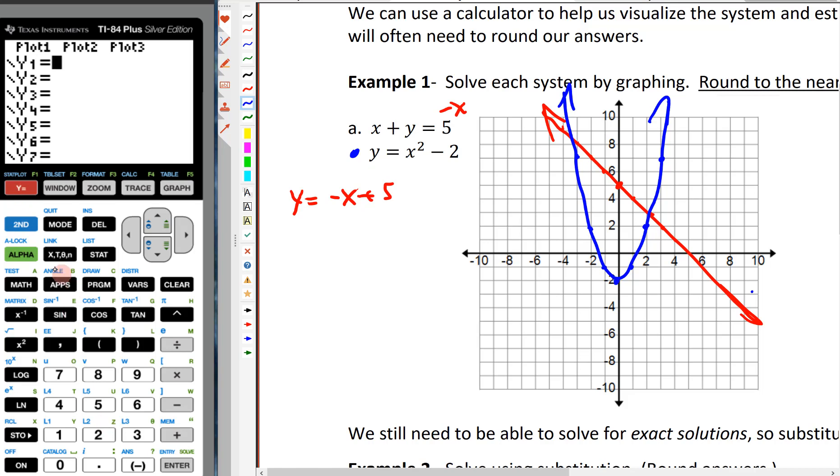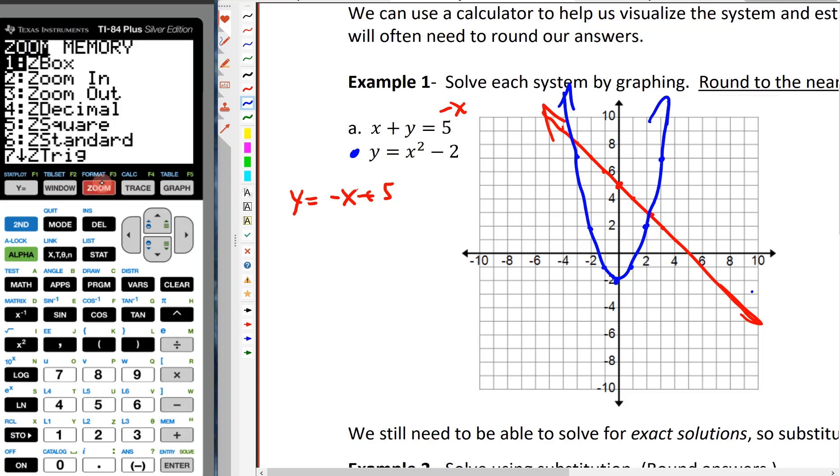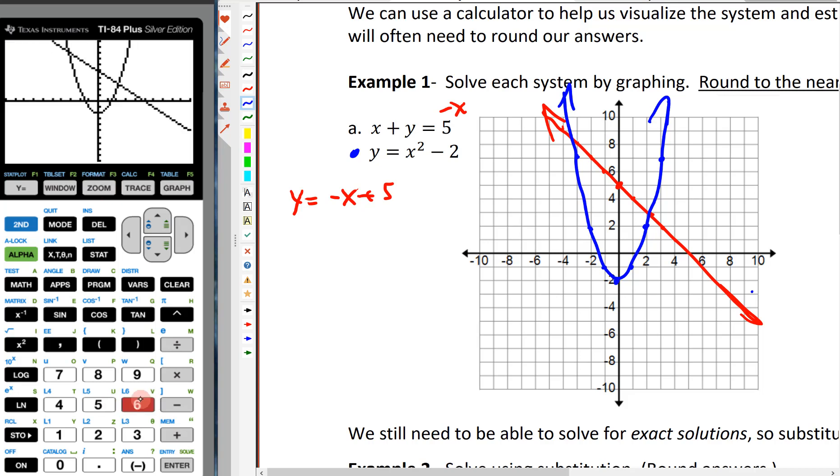So we're going to type these in. I'm going to hit y equals, and I'm going to type in x squared minus 2. And then the next one is negative x plus 5. If you haven't reset your calculator in a while, it might not be a bad idea to hit zoom 6, just zoom standard.